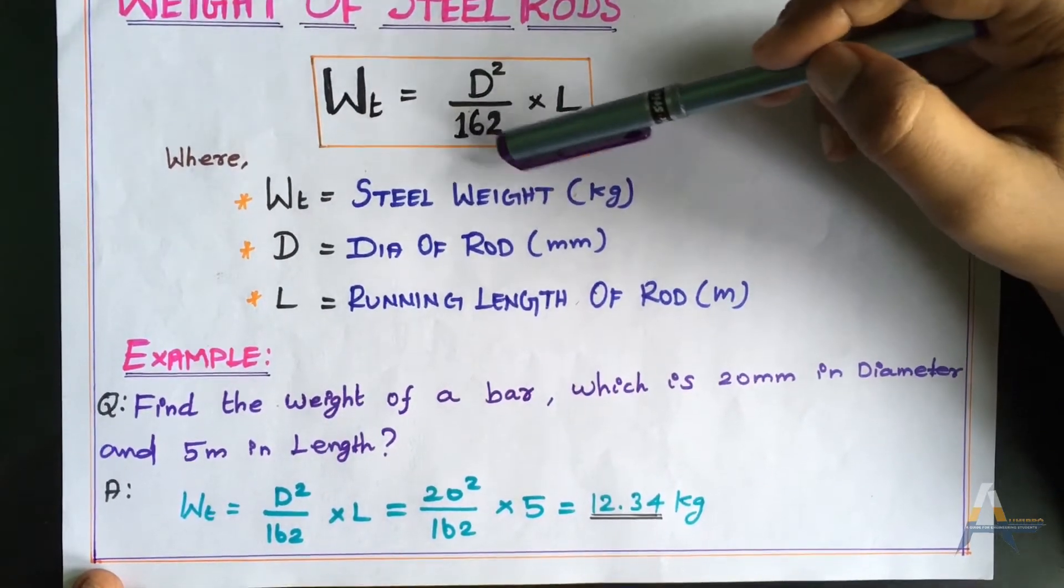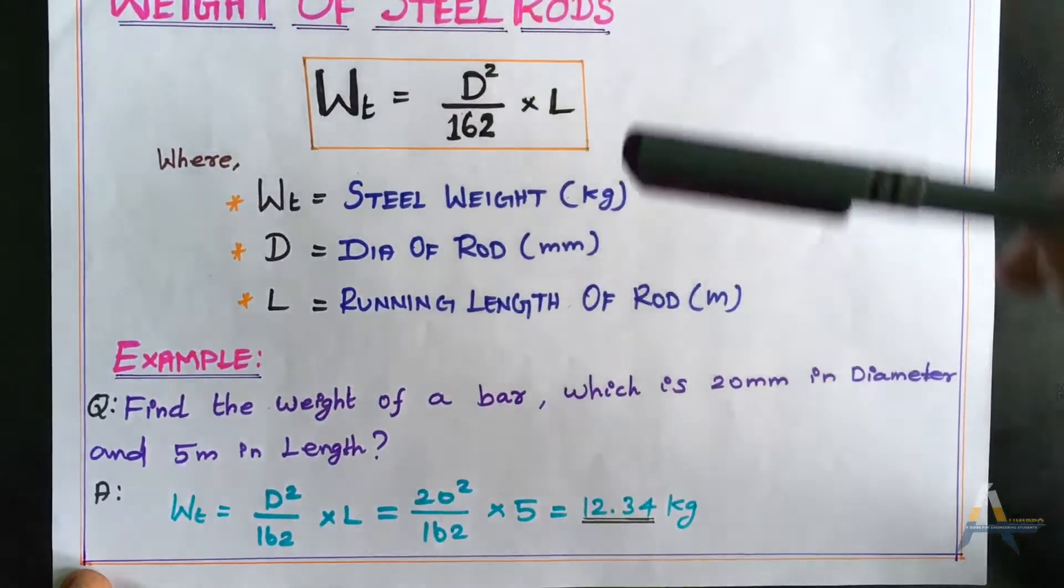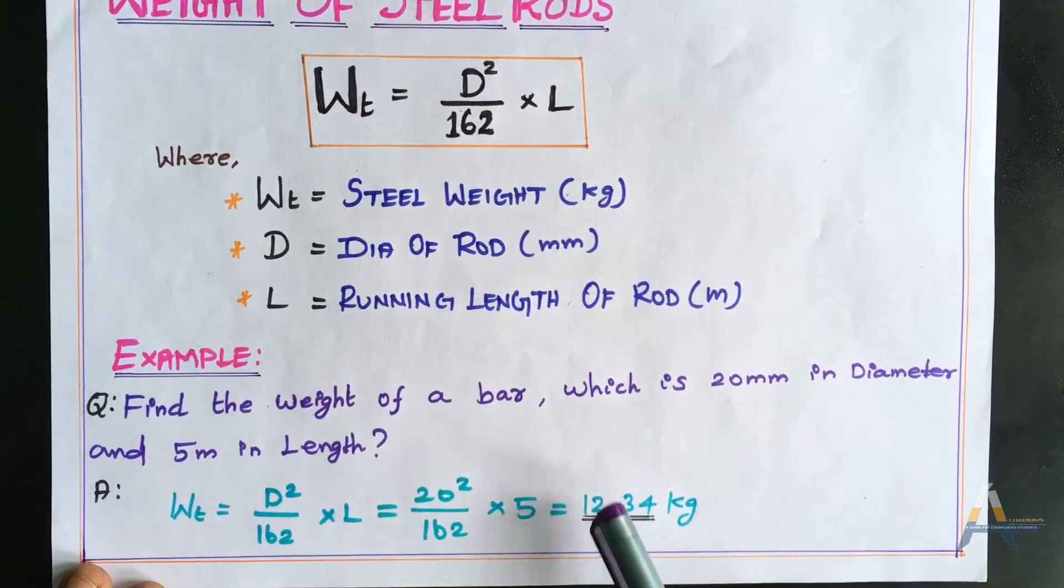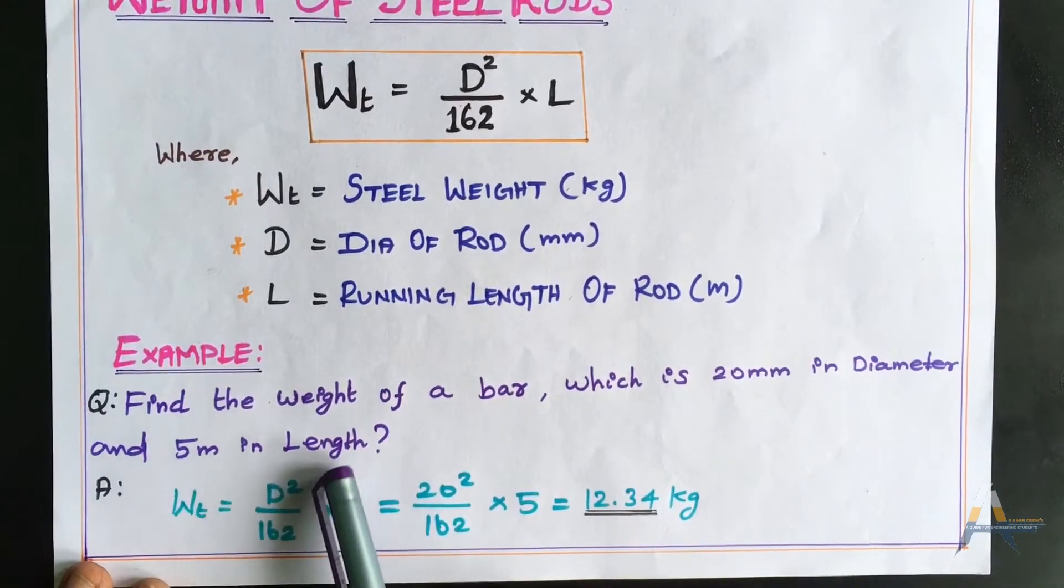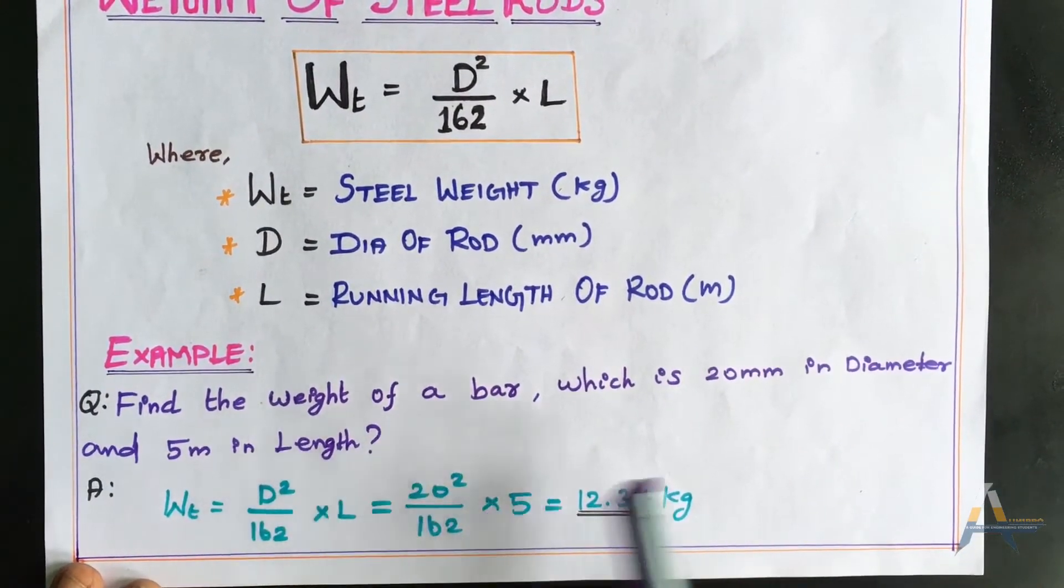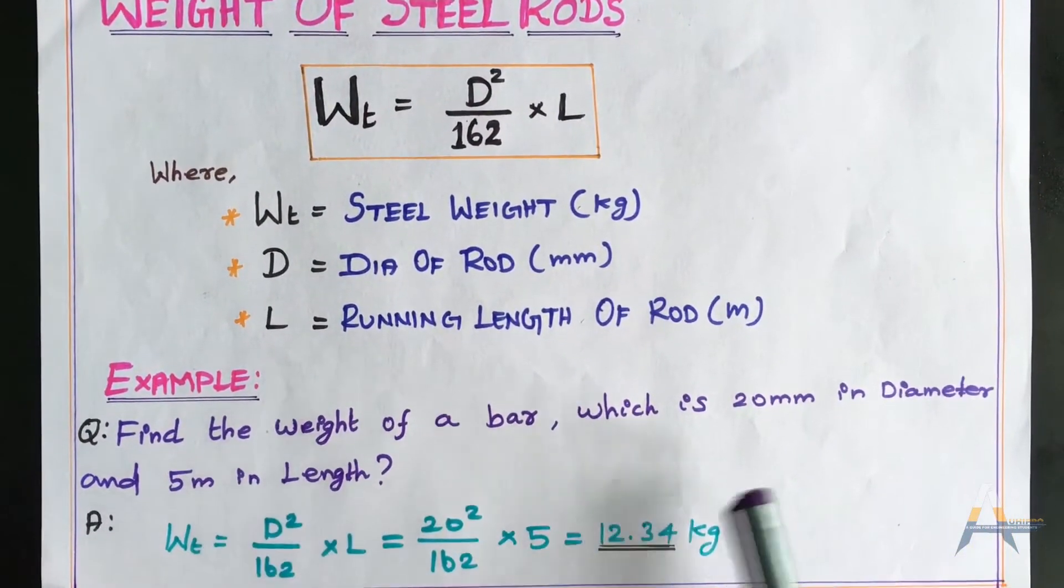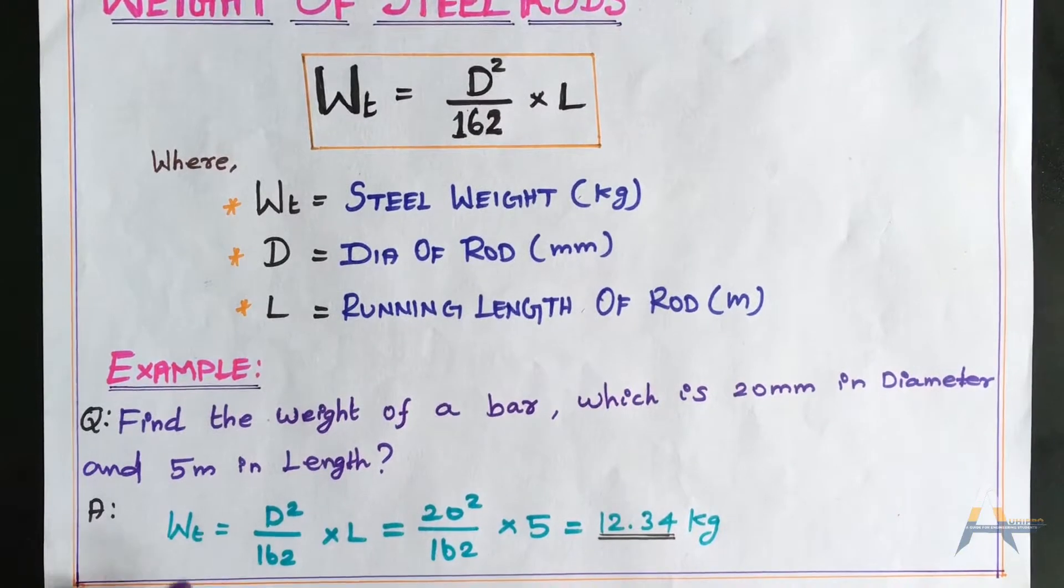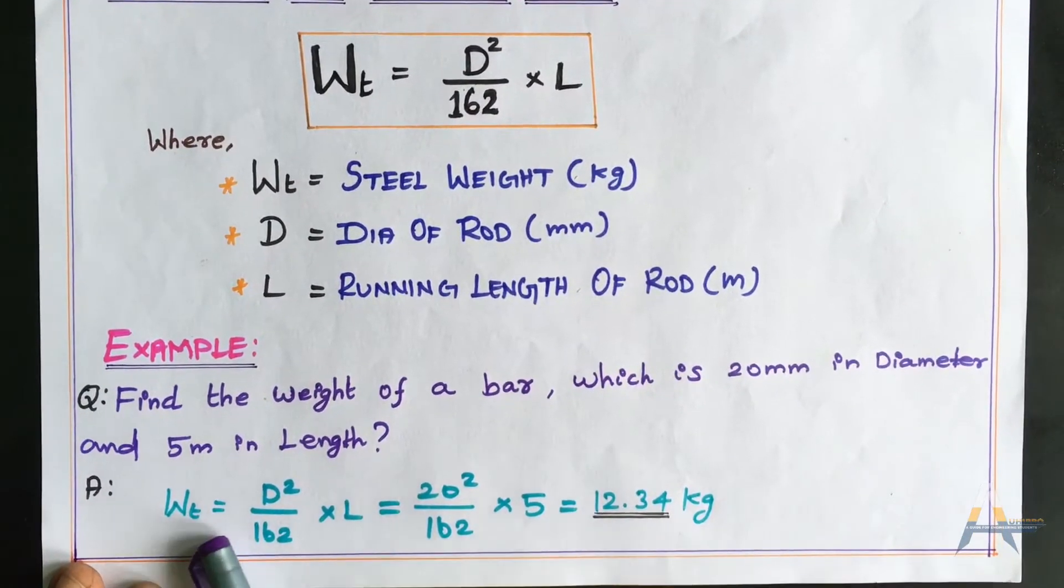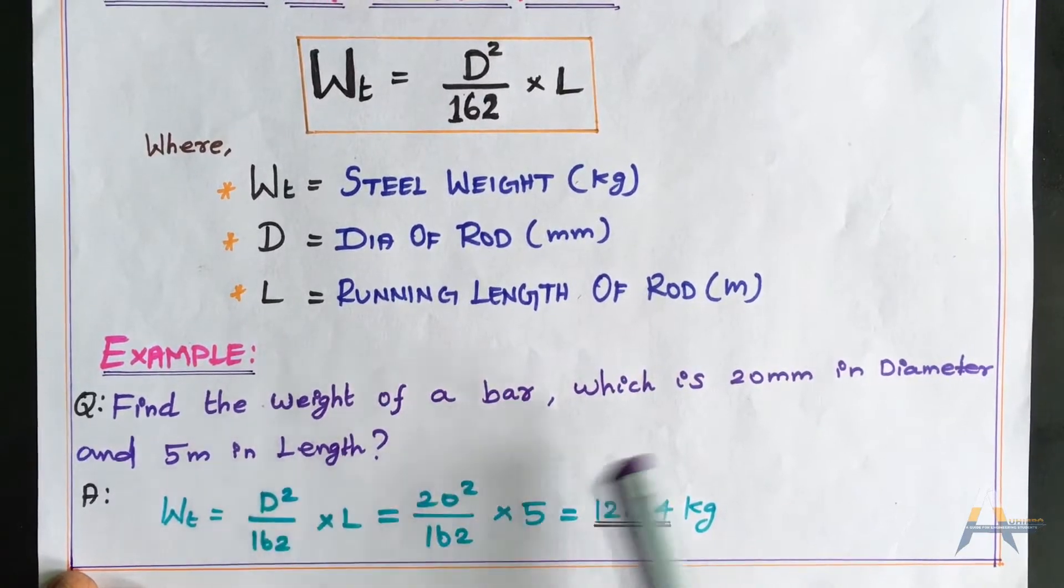For example, find the weight of a bar which is 20mm in diameter and 5m in length. Weight of bar Wt equals D² by 162 times running length. So D is 20mm.